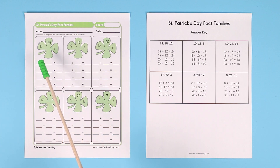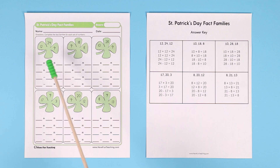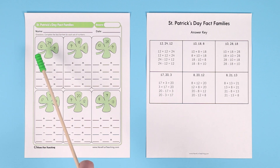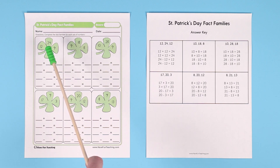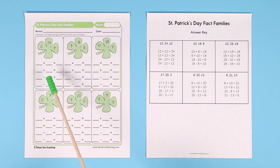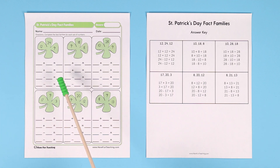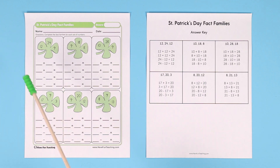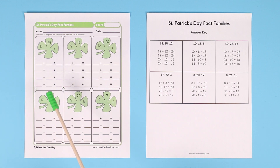So for example, in the first one we have 12, 24, and the third number is a mystery. If you take the lowest two numbers, 12 and the mystery number, which is 12, and you add them together, you get 24. So you do 12 plus 12 equals 24. You switch the two addends around — and they're the same in this case — 12 plus 12 equals 24. And then you can make two subtraction problems. Start with the largest number: 24 minus 12 equals 12.